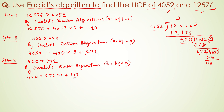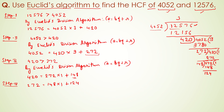We are still getting a remainder, so we move to step 4. Now 148 is the divisor and 272 is the dividend. This divides only one time, giving a remainder of 124. So we write: 272 equals 148 into 1 plus 124.